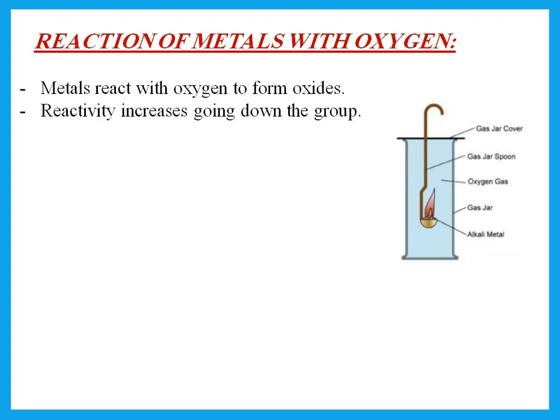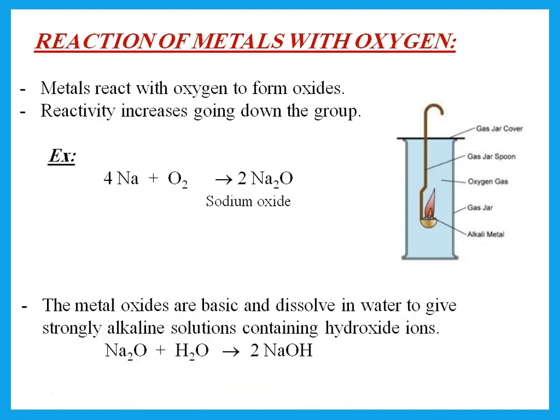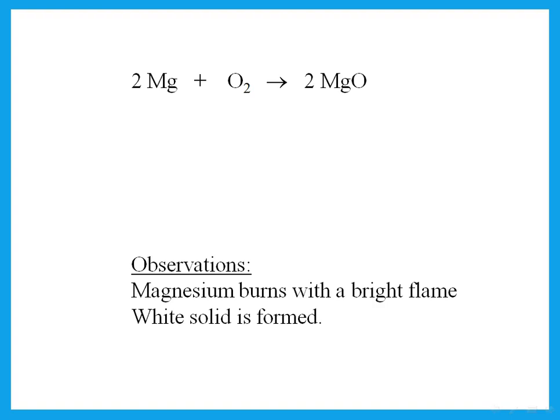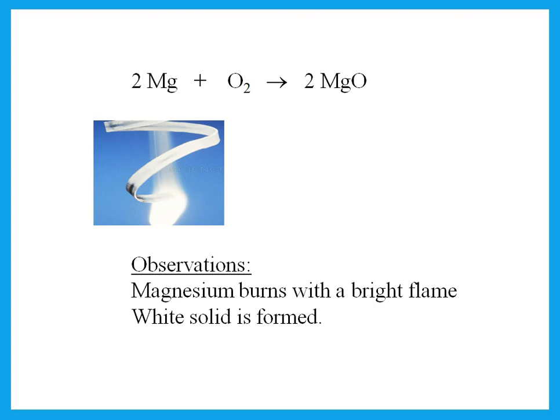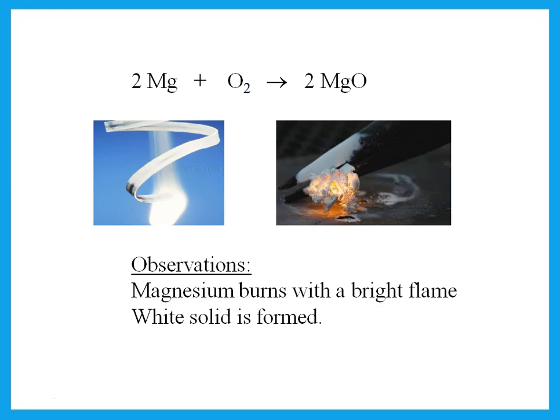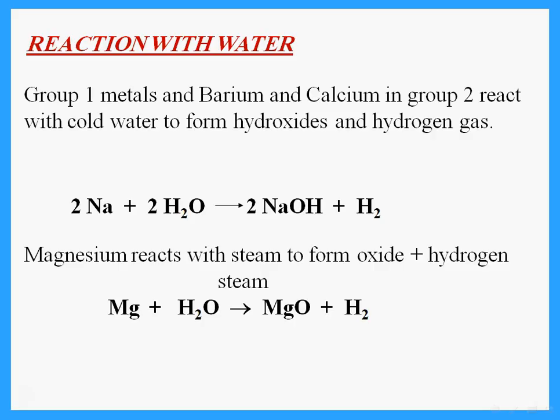When we burn any metal with oxygen it forms the oxide — for example, sodium with oxygen forms sodium oxide. These are basic oxides of metals; when dissolved in water they form strongly alkaline solutions. Magnesium burns in a bright flame forming a white solid, magnesium oxide. Group 1 and Group 2 up to calcium react with cold water, forming hydroxide and hydrogen gas.